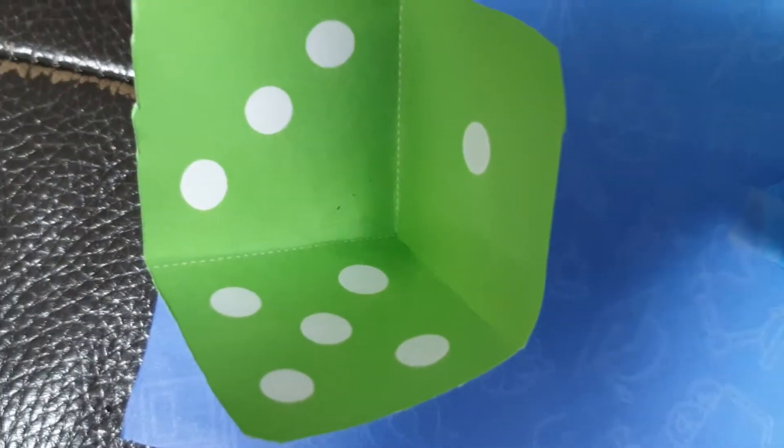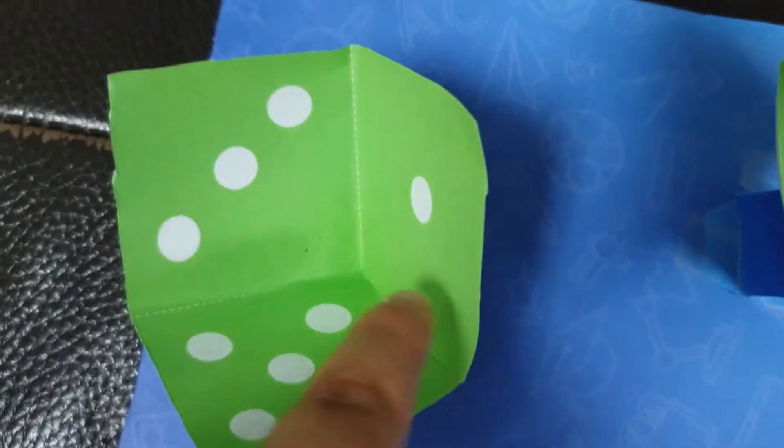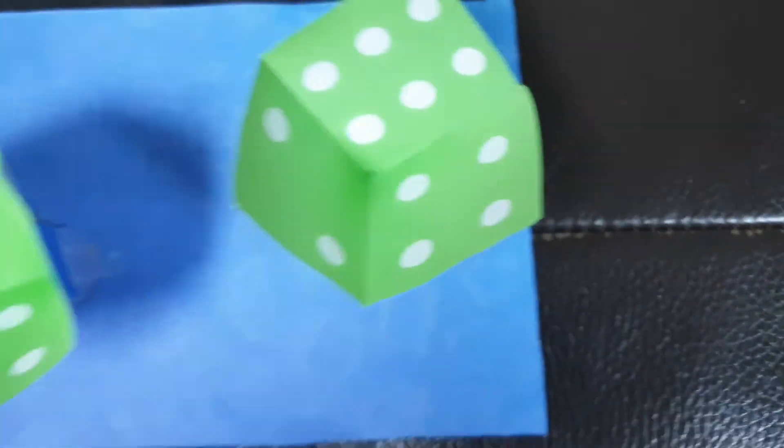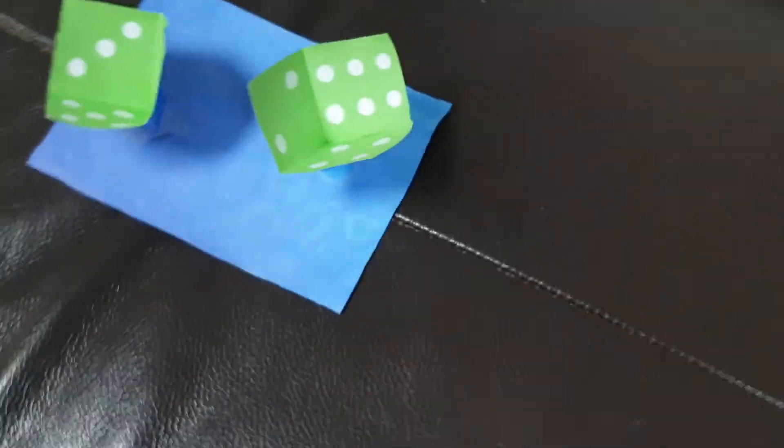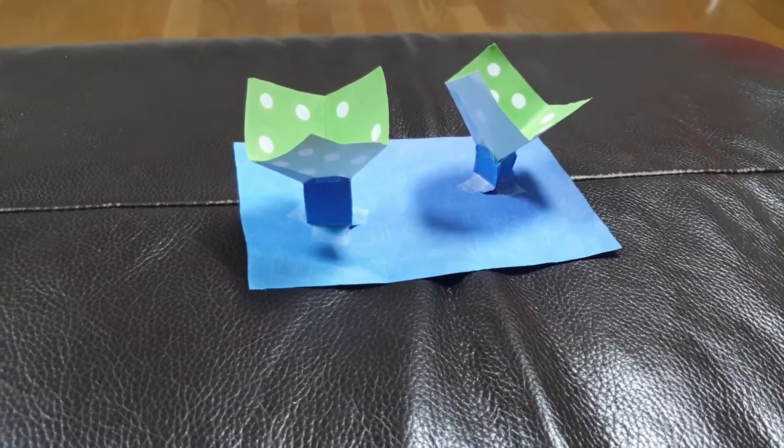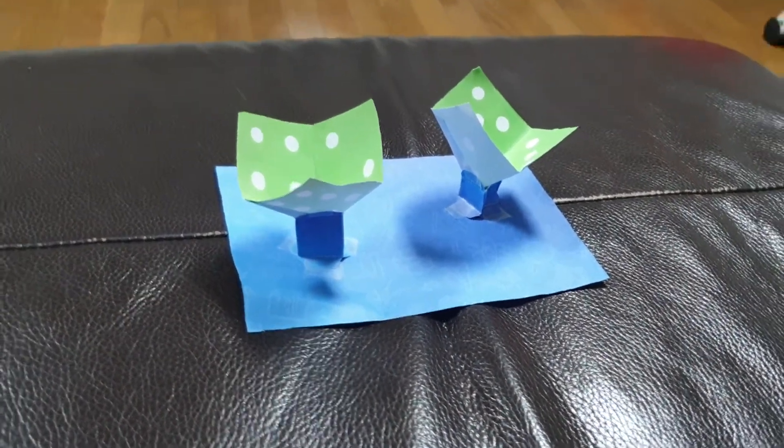If you see here closely, these two dice are not normal dice. So if you see from the back, you can clearly see that these two dice are not normal.